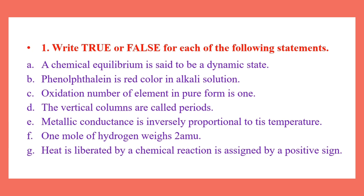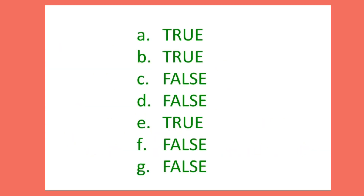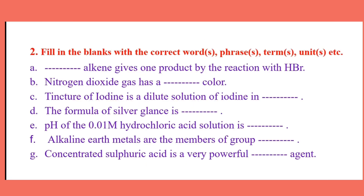Number 2: Fill in the blanks with the correct words, phrase, terms, units, etc. Number A: Blank alkali gives one product binary action with HBr.